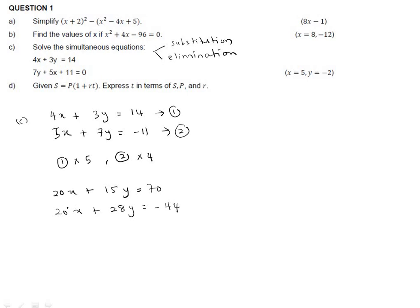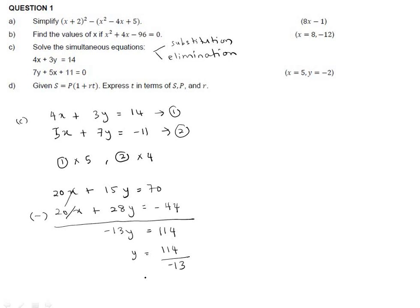We eliminate x by subtraction: 20x minus 20x equals 0. Then 15y minus 28y equals -13y. And 70 minus (-44) equals 114. So y = 114 / (-13), which gives y = -114/13.